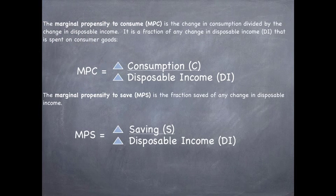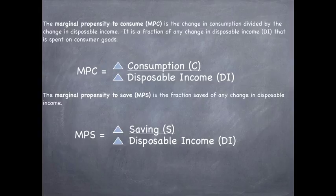The MPC is the change in consumption divided by the change in disposable income. It is a fraction of any change in disposable income that is spent on consumer goods. So, the MPC equals change in consumption divided by change in disposable income.